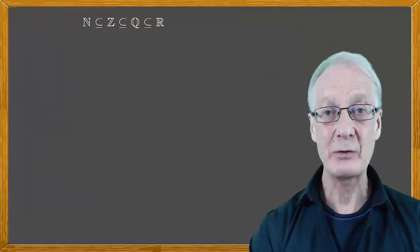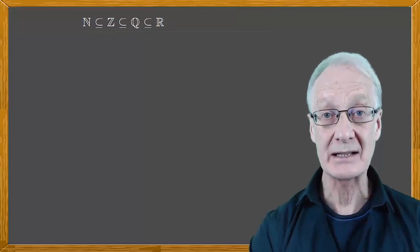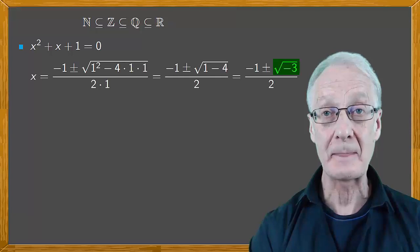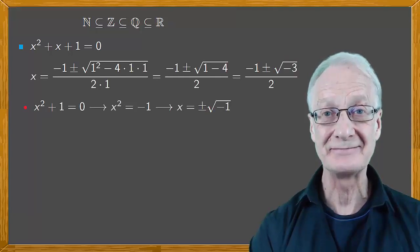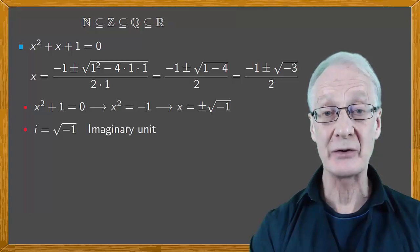Now, there are equations with integer coefficients that don't have real number solutions. For instance, when trying to solve a quadratic equation, the discriminant may be negative. This happens, for example, with the equations x squared plus x plus 1 equals 0, and x squared plus 1 equals 0. Equations like these do have solutions, but they involve the imaginary unit denoted by i, which is the square root of minus 1.